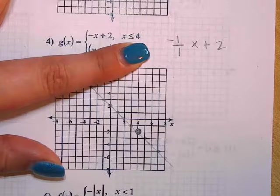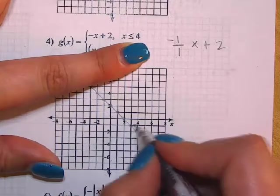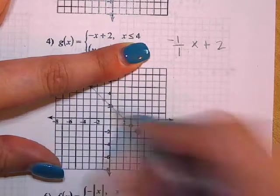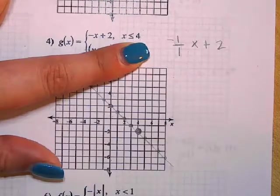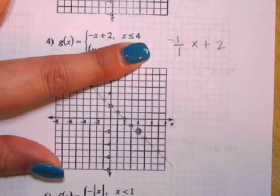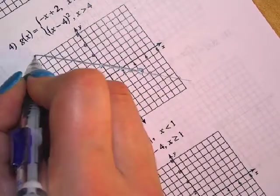And then it says x is less than or equal to four. So three, two, one, zero. Those are all the points that work. And so which direction should I draw the line? Yeah, up and to the left. So I'm going to go ahead and draw this.